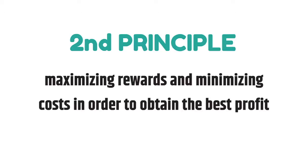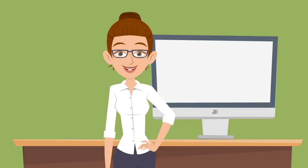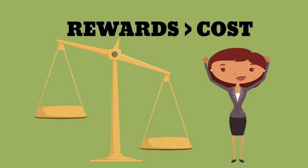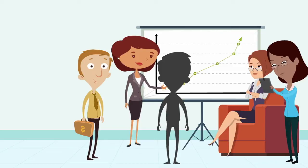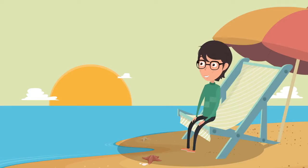The second principle involves maximizing rewards and minimizing costs in order to obtain the best profit. As human beings, we are motivated by self-interest, and as a result, we're always going to try to choose interactions in which our rewards are greater than our costs. Sam attempts to maximize her rewards and minimize her costs by buying cheap baseball tickets as a reward for Philip when he sacrifices his lunch hour. Although the tickets cost Sam, they are not as costly as not having Philip attend the important business meeting or providing a more costly reward, such as a week-long vacation.